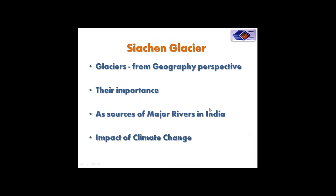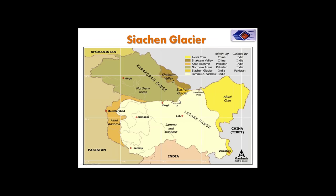A map of the Siachen Glacier is shown here. The territory controlled by India — Jammu and Kashmir — is shown in light color, Aksai Chin controlled by China is in yellow, and the northern areas and Azad Kashmir controlled by Pakistan are also visible. Siachen Glacier occupies a very strategic location in between these conflict zones. The glacier is situated in the Karakoram Range, at the point where India and Pakistan's Line of Control ends, beyond which the border is ambiguous with overlapping claims by both countries.